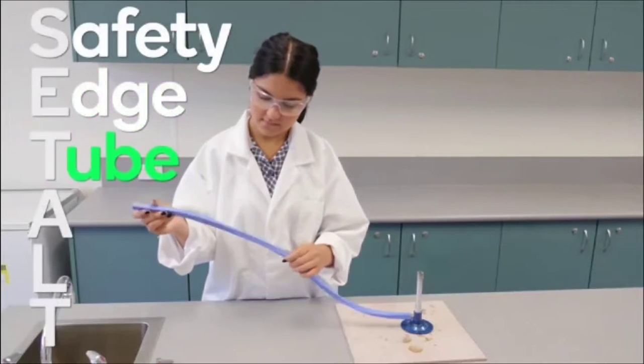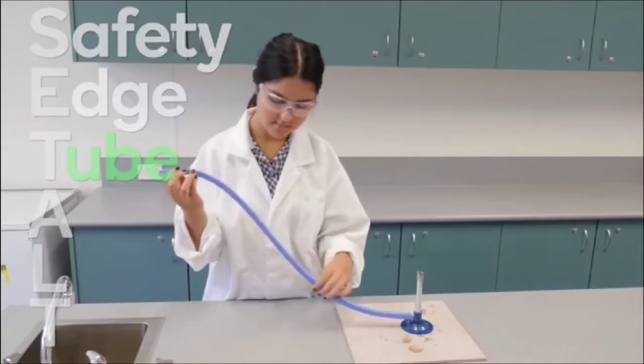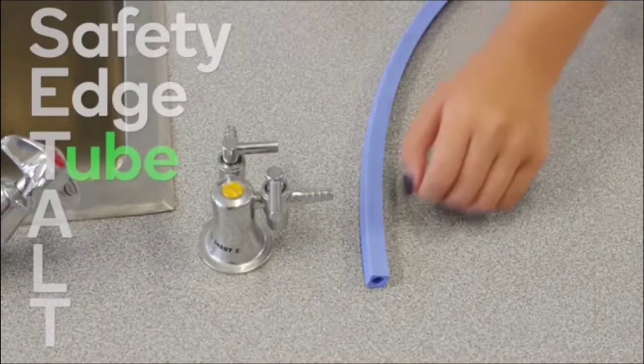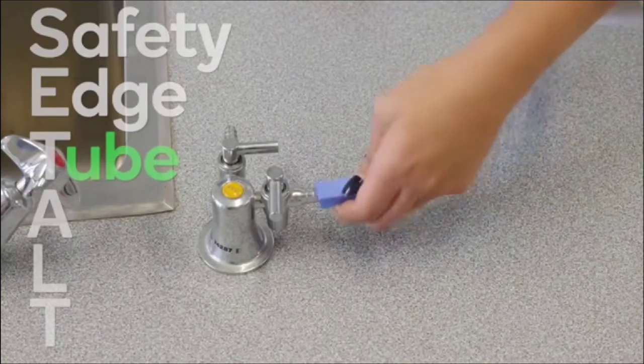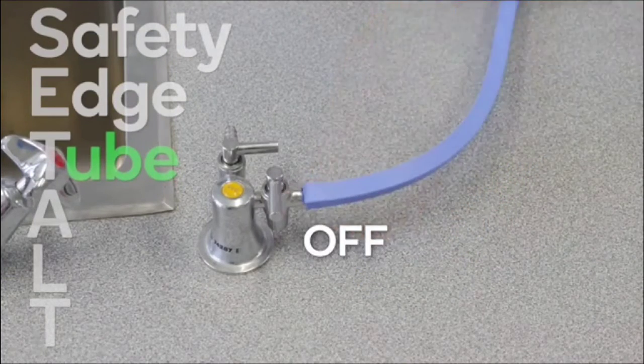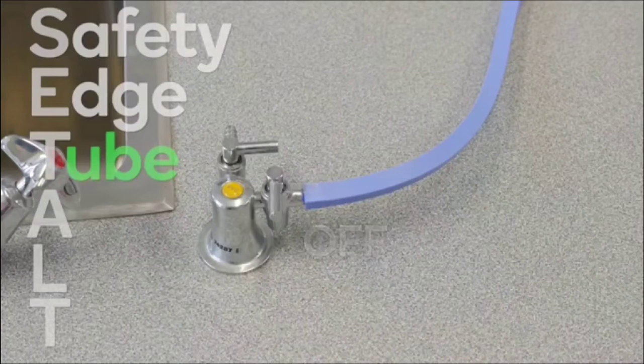T is for tube. Check that the rubber tube is free of cracks. Connect the tube firmly to the gas tap. Make sure the tap is in the off position. Remember, the off position makes an L shape.